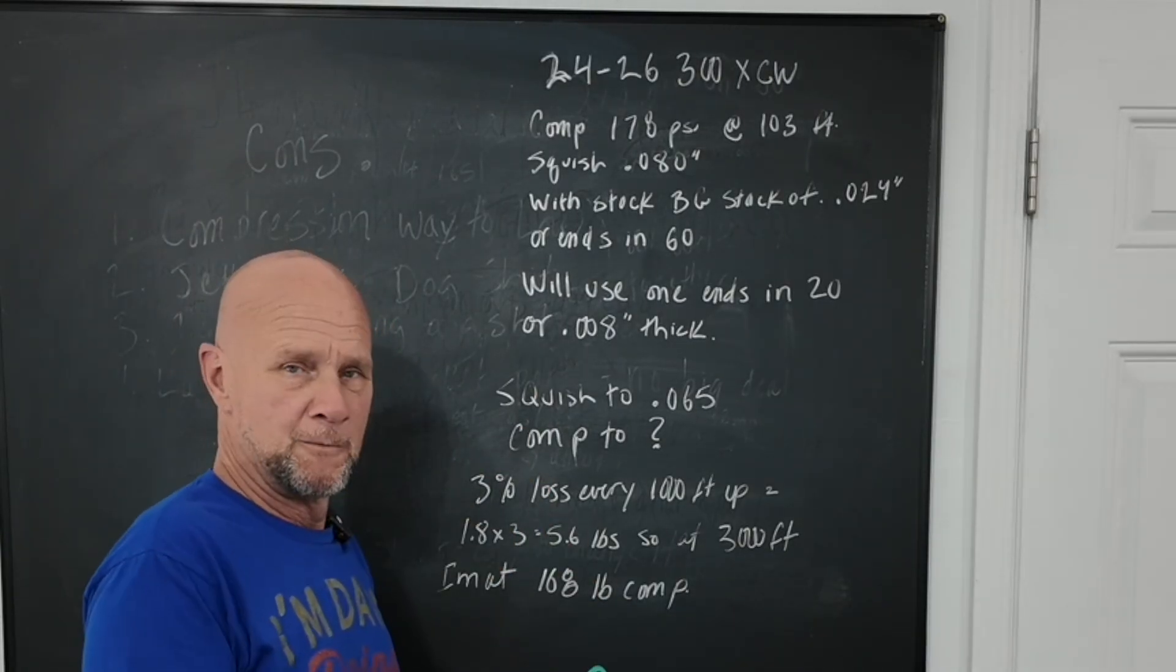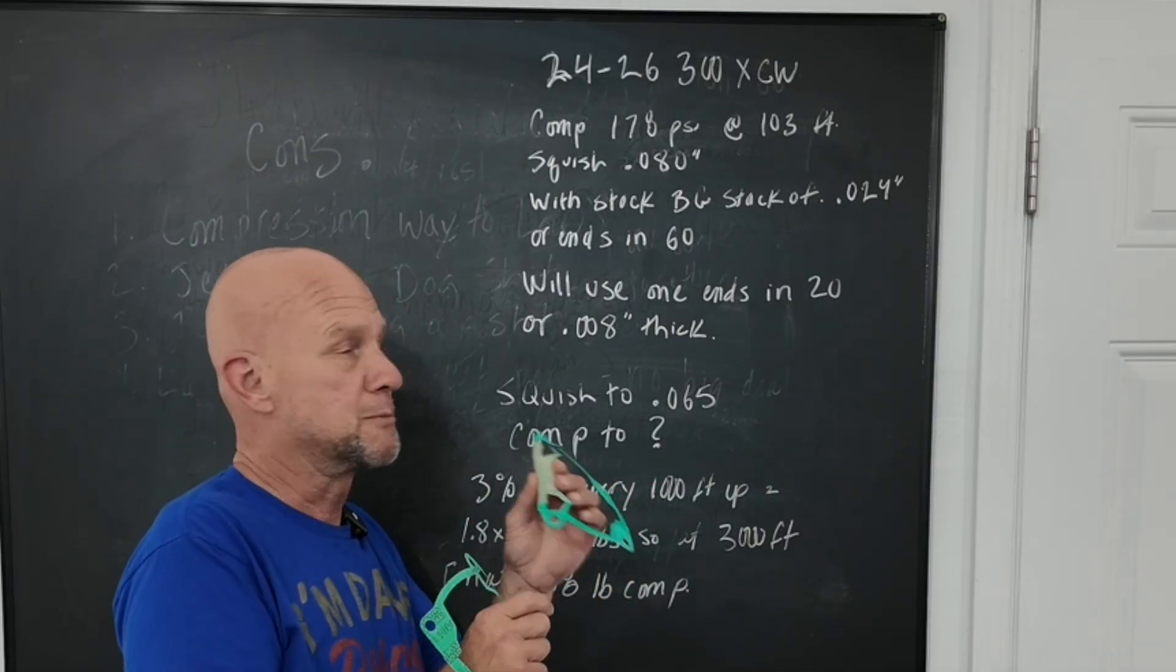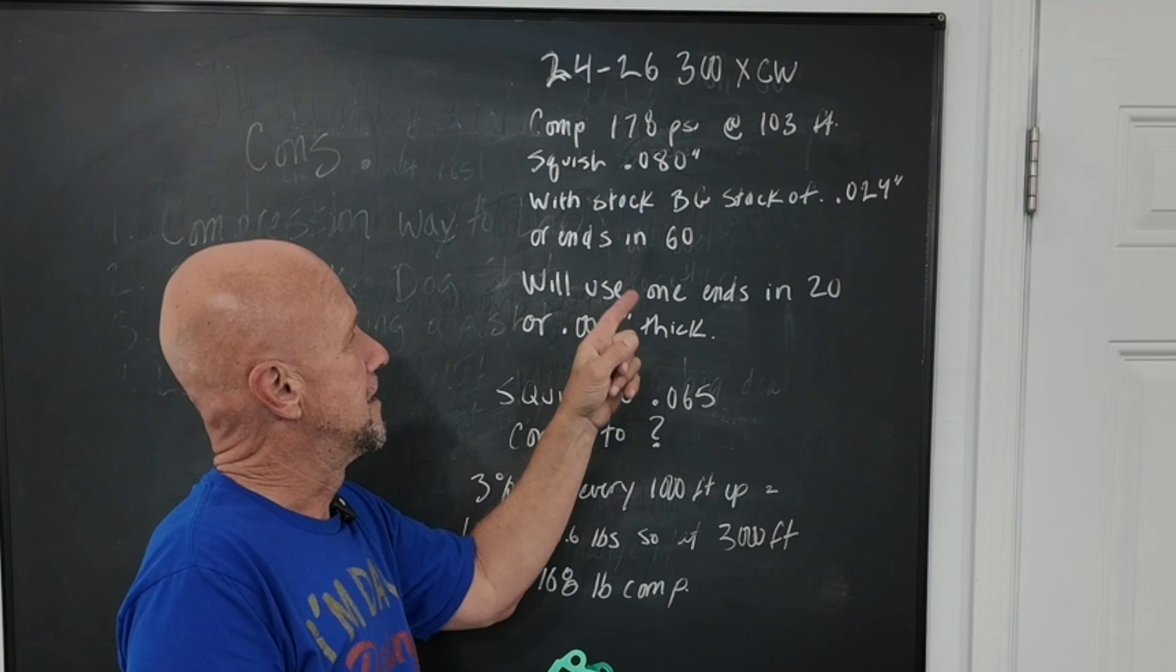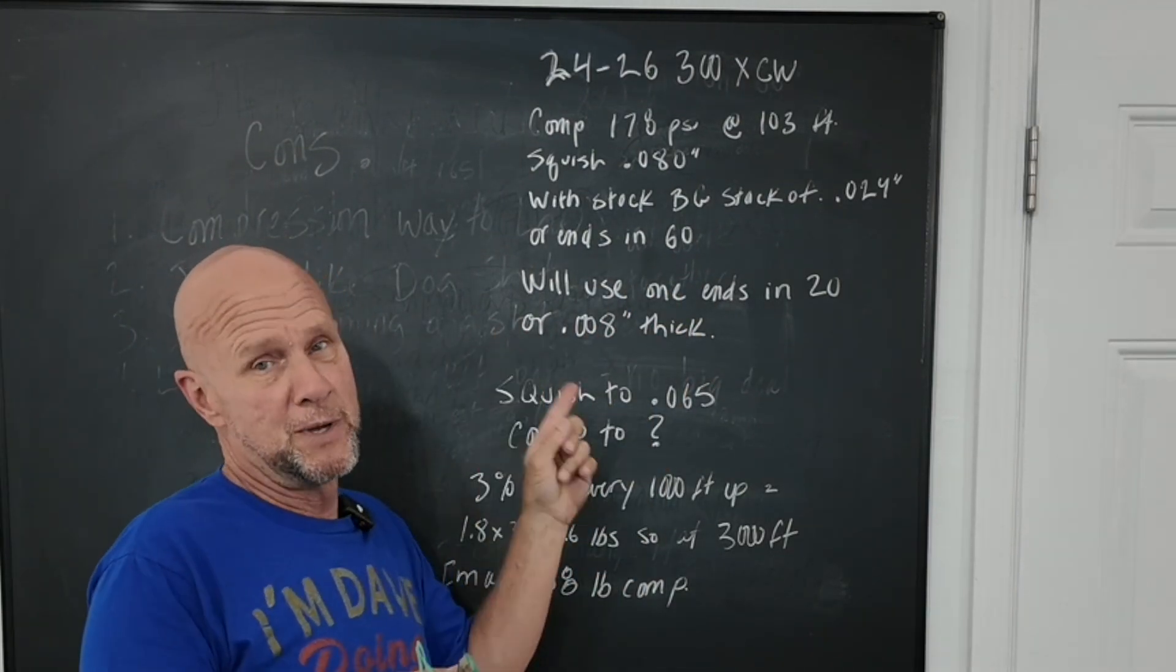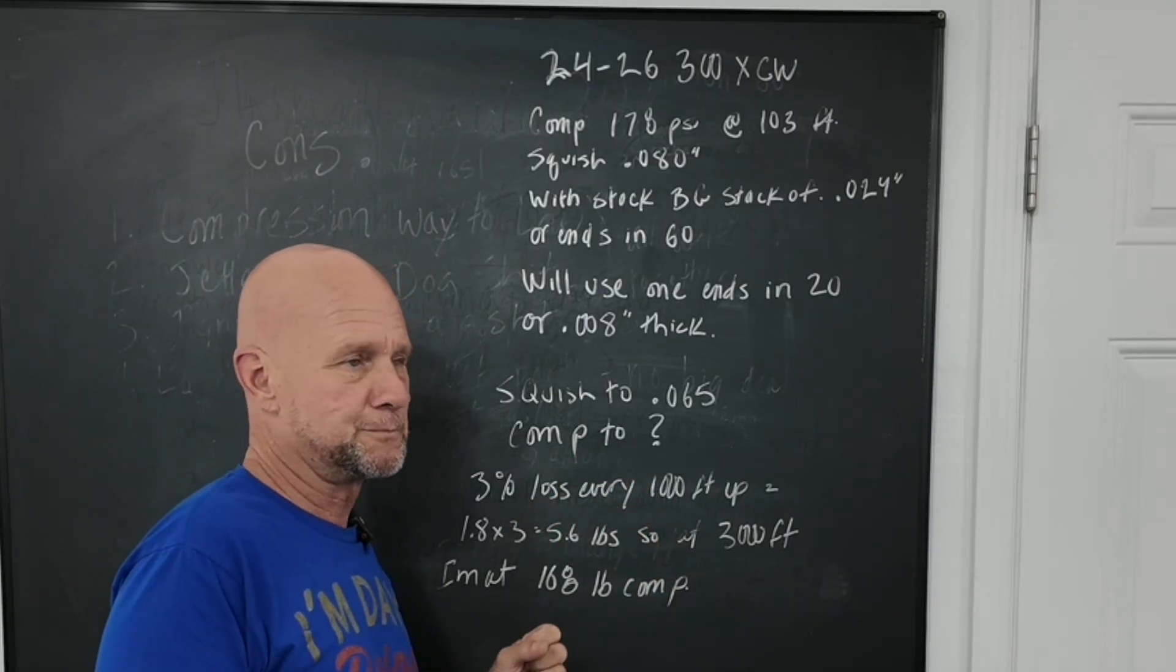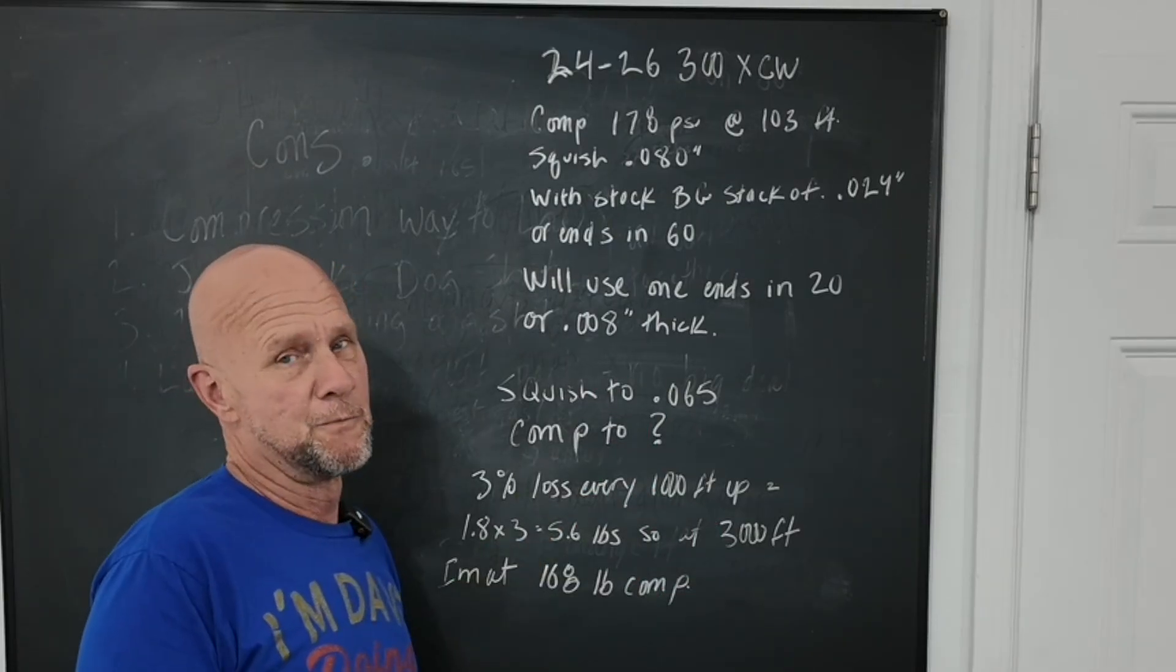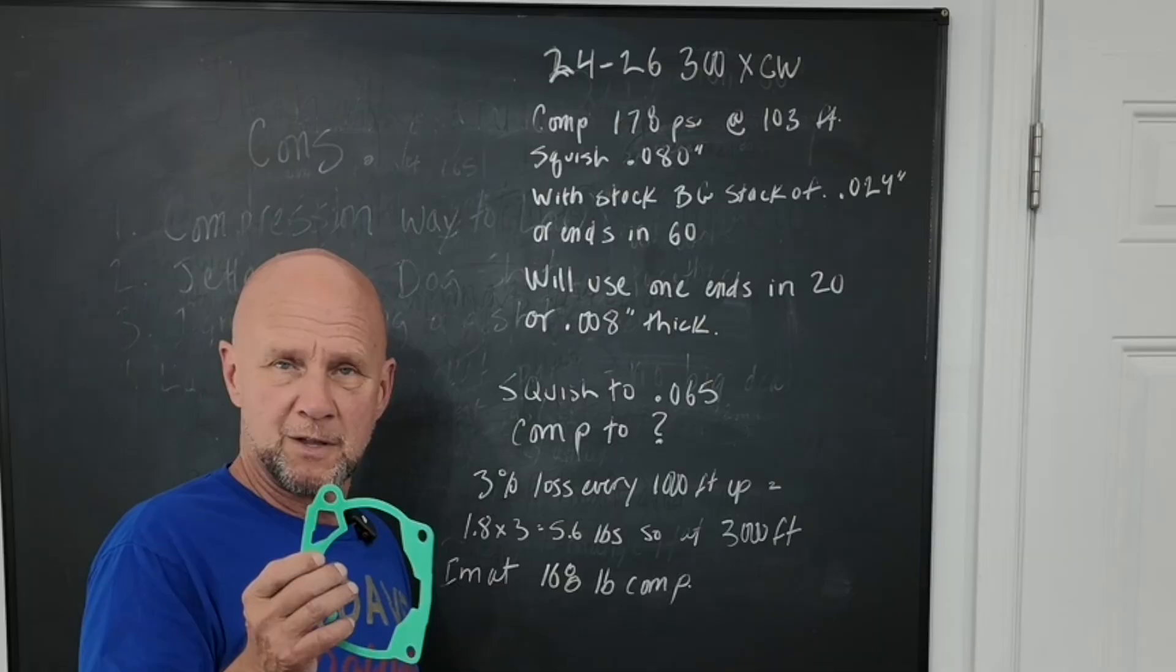What I care about is what my base gasket stack was. So I took it apart, they've got two base gaskets put together, base gasket stack stock is 24 thousandths, which is the base gasket in the KTM parts numbers that ends in 6-0. What I'm going to do is use the one that ends in 2-0, the thinnest one, and that is 8 thousandths thick.